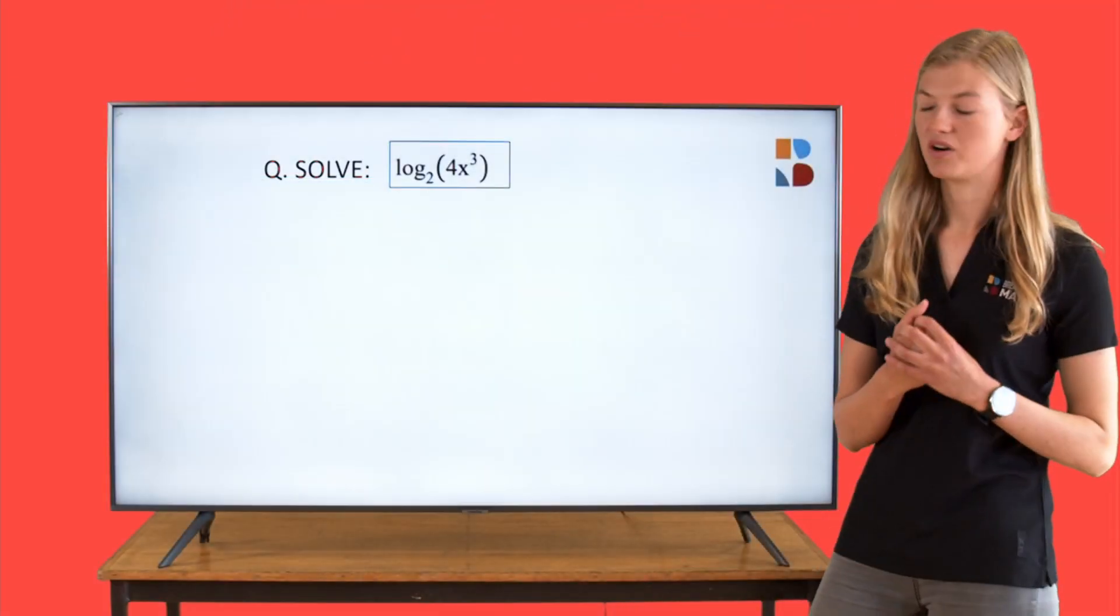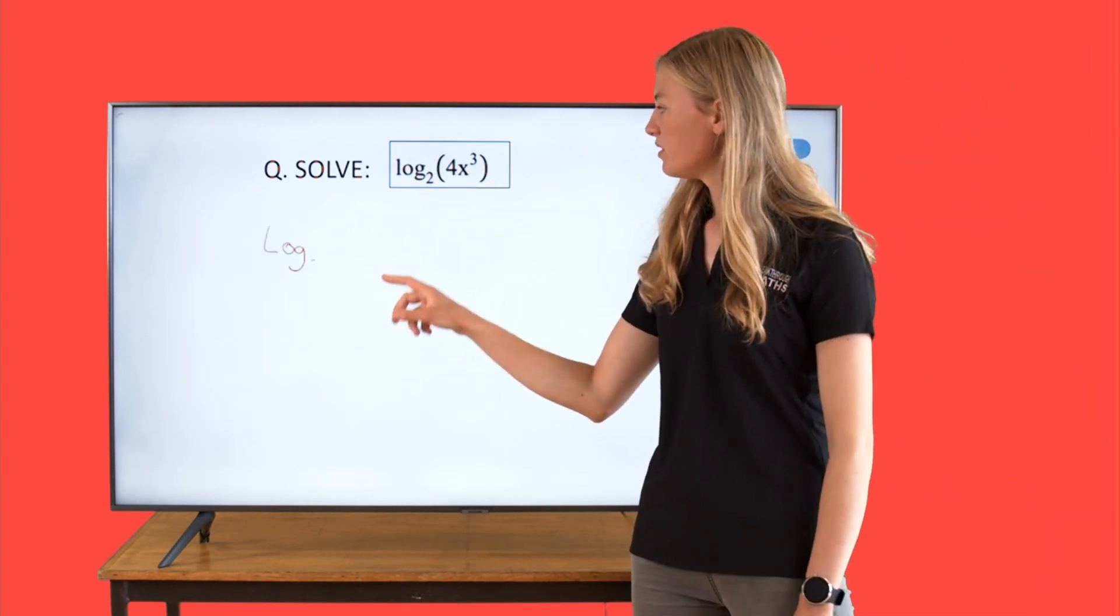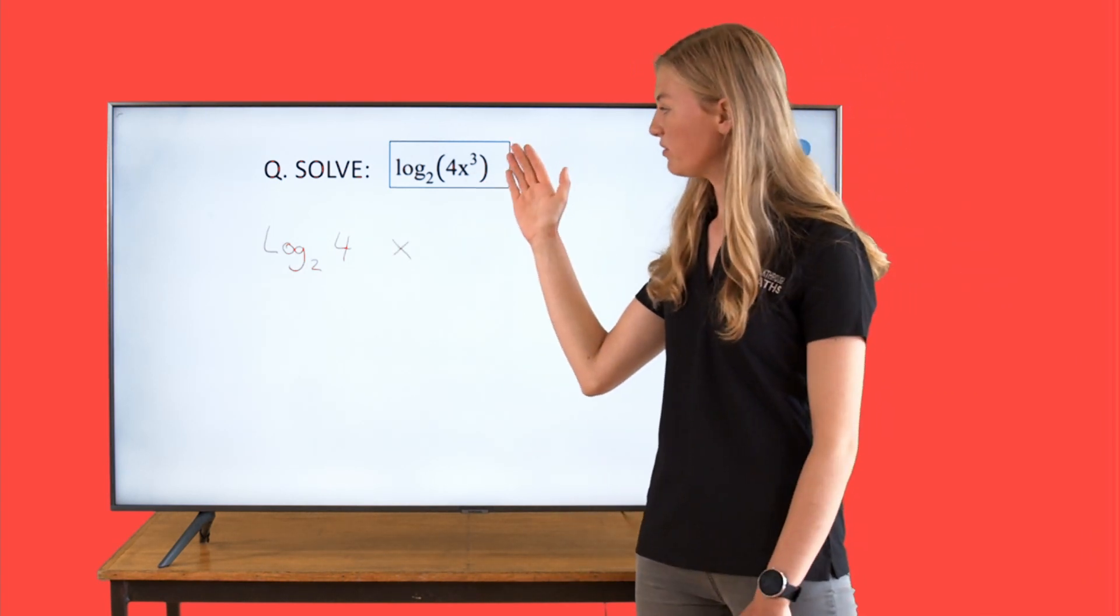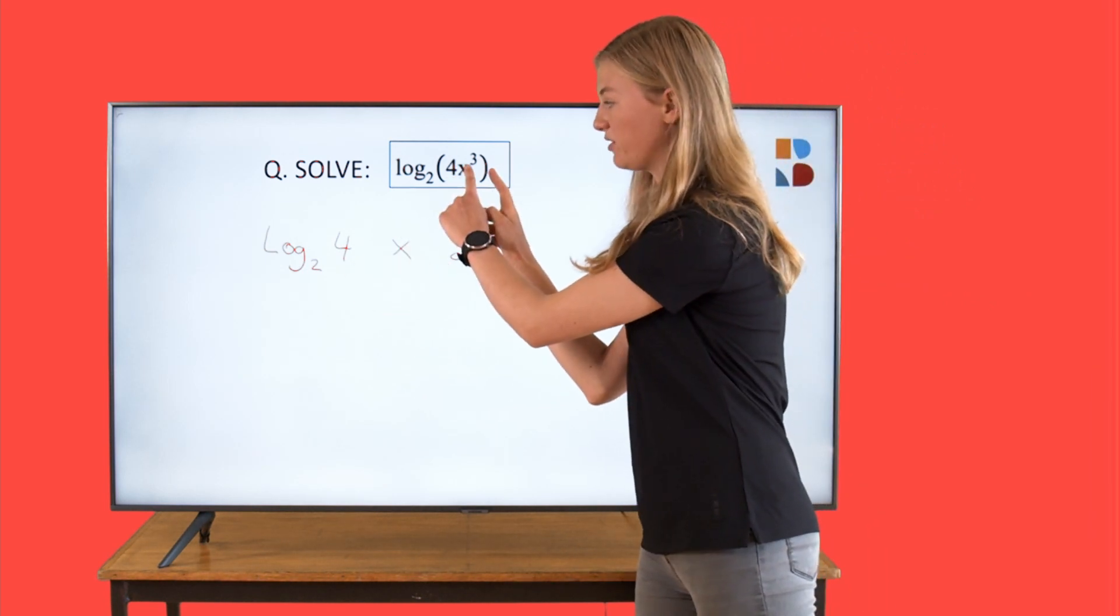Let's just rewrite this so that we can picture it a bit better for ourselves. Log to the base 2 of 4 multiplied by x to the power of 3. So this is exactly the same as what we have up there.